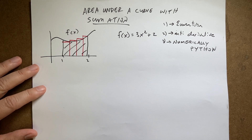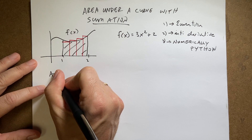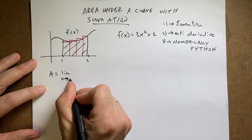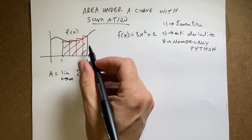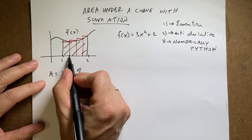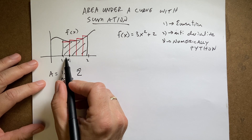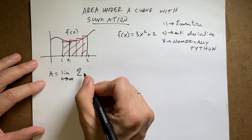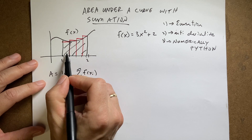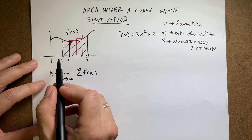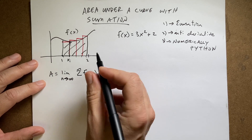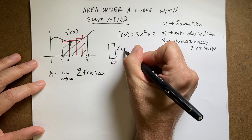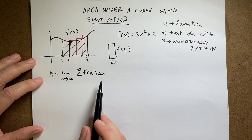So we're going to say the area A is going to be the limit as n goes to infinity of the sum of these areas. The area of one rectangle: the height is f(xᵢ) — because that's the function evaluated at xᵢ — and the width we'll call delta x. So that rectangle is delta x by f(xᵢ). I need an expression for xᵢ and an expression for delta x.